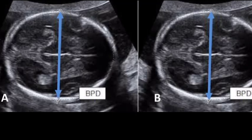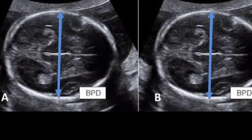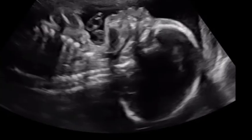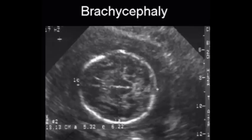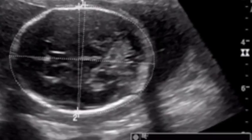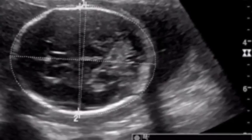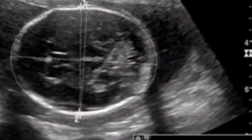Fetal head shape variations — dolichocephaly, brachycephaly — and fetal position can affect the diagnostic accuracy of biparietal diameter.